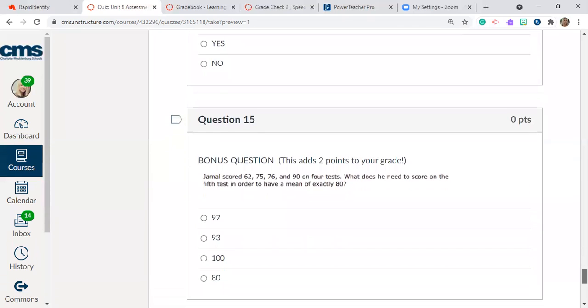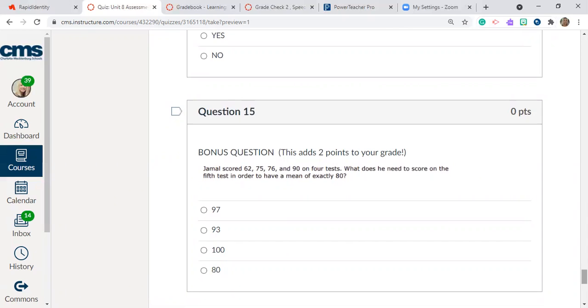All right, question 15 is a bonus question. So it will add two points to your grade if you can get this one correct. Jamal scored 62, 74, 78, and 86 on four tests. What does he need to score on the fifth test in order to have a mean of exactly 80? All right, so here's his scores on four and we're missing the number for that fifth test. What would he have to score on that fifth test to get exactly an 80? You could use guess and check here too. 97, 93, 100, or 80.